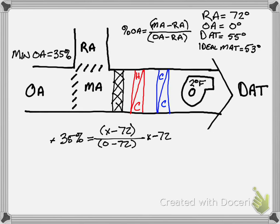So that equals negative 72. We're going to multiply both sides by negative 72. So that's 0.35 times negative 72. And so this comes out to be negative 25.2 equals X minus 72. We add 72 to both sides. And then we come up with X or MAT equals 46.8 degrees Fahrenheit.